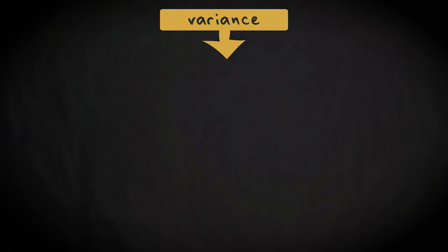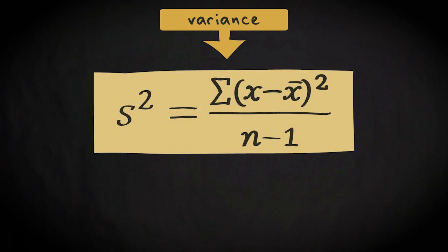Let's start with the variance. This is the formula of the variance. Let me show you how it works step by step. S squared stands for the variance. This part of the formula means that from every observation x, you have to subtract the mean value of that variable, x bar.